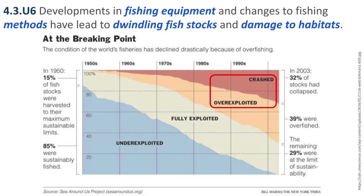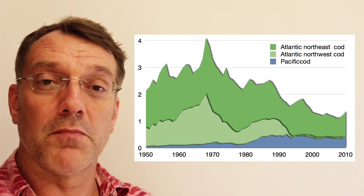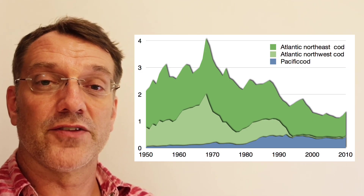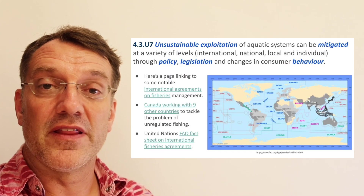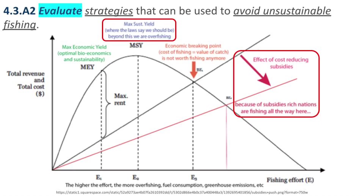In some wild fisheries the situation has gotten so extreme that they've actually collapsed, meaning those fish are on the verge of extinction or reduced to levels so low they're no longer commercially viable — not worth the time, money, energy, and effort to find and bring to market. A common theme in ESS is mitigation strategies — reducing the impact of a problem, making it less bad. You may be asked to evaluate strategies to avoid unsustainable fishing practices by examining the pros and cons and reaching a conclusion about whether the pros outweigh the cons.